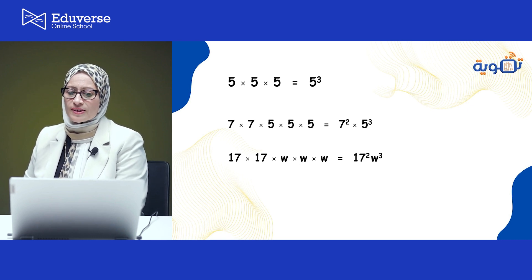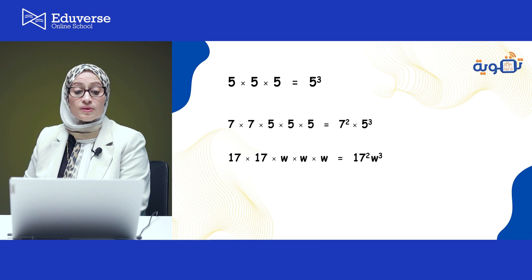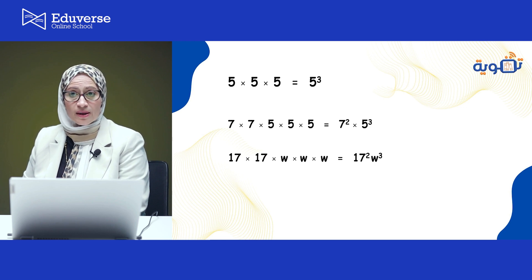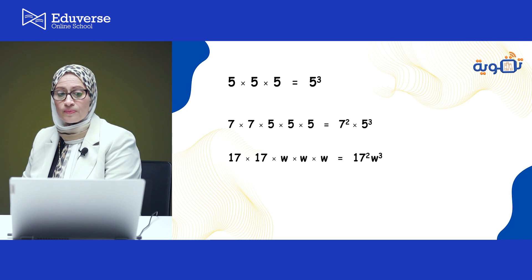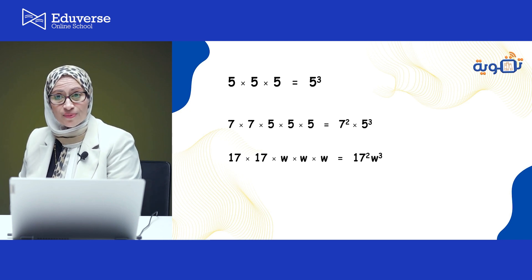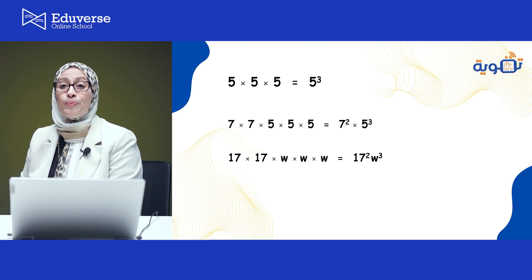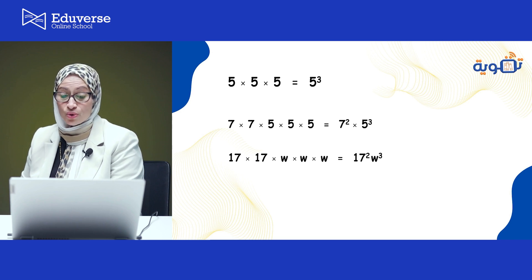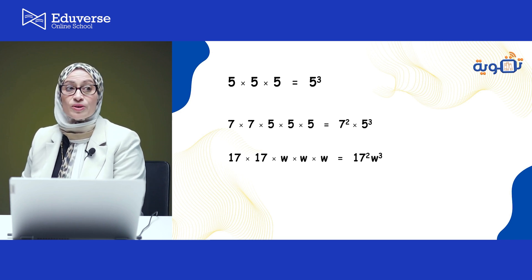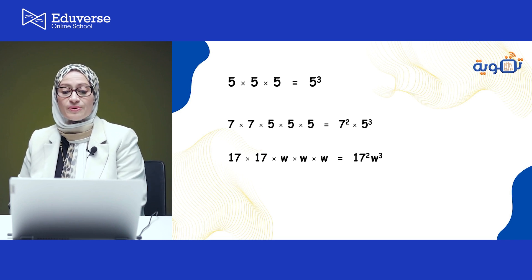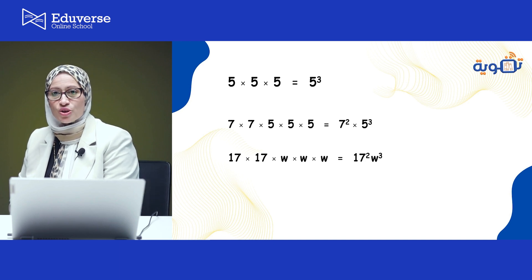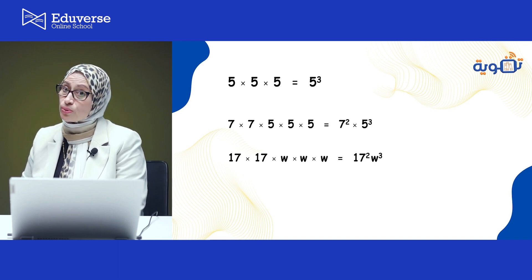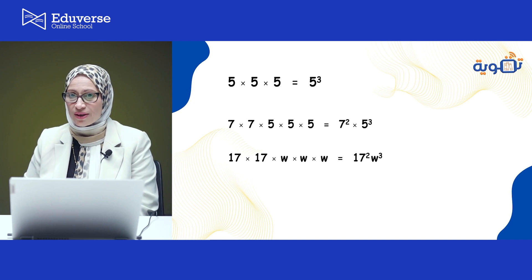What if it's numbers and symbols? So 17 × 17 × w × w × w. I will check: 17 is repeating twice, so it will be 17 to the power 2. What about the w? W is repeating 3 times, so it will be w to the power 3. The final answer is 17² × w³.